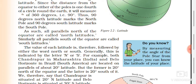All parallels north of the equator are called north latitudes, and the lines parallel to the south are called south latitudes. The value of each latitude is followed by either the word north or south. So if you are referring to any latitude above the equator, it is called north latitude.